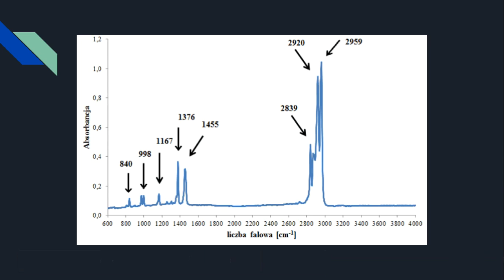Here's an example of what you would get with an infrared spectrometry graph. These very sharp peaks indicate some kind of pigment, while these specific peaks in other locations indicate a certain binder type.